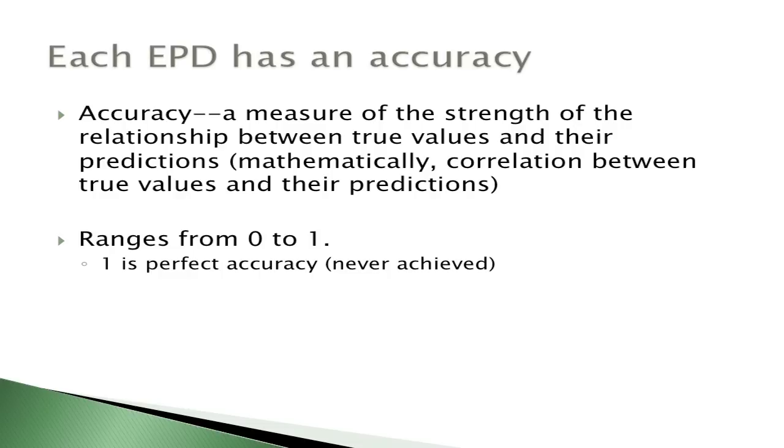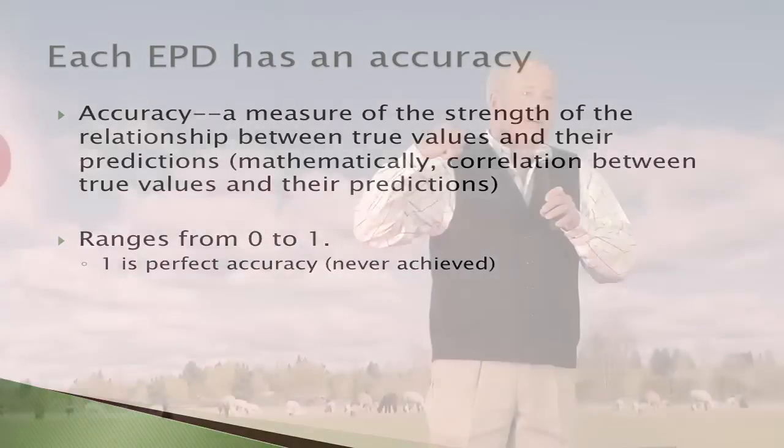Every EPD has an accuracy value. Accuracy tells us how good we are at predicting an animal's breeding value — what it's going to pass to the next generation. It ranges from zero to one, and we never get to one. There are bulls in the dairy industry with hundreds of thousands of progeny where accuracy is still .99 — that's a theoretical best. The closer to one we are, the more data has gone into that EPD and the more confidence we have in it.